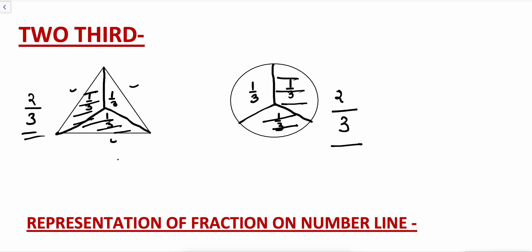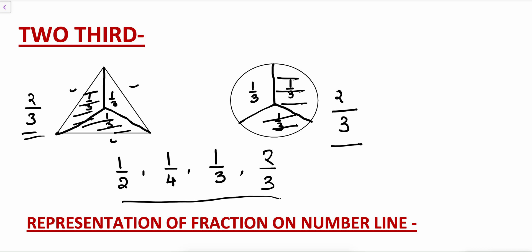So we have seen: half is written as 1 by 2 in fractions, quarter is written as 1 by 4, one-third is 1 by 3, two-third is 2 by 3. By this way we represent portions in fractions.